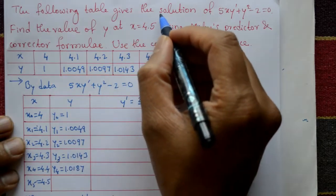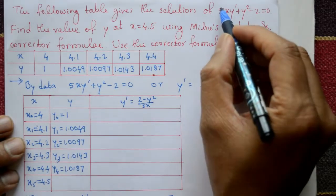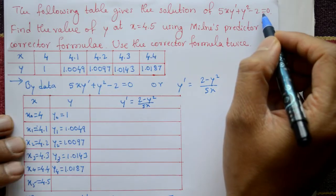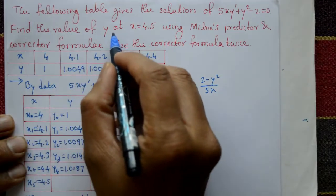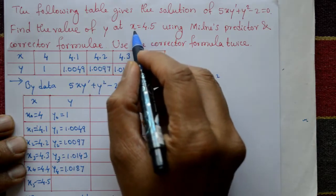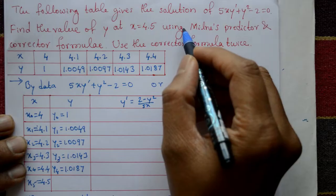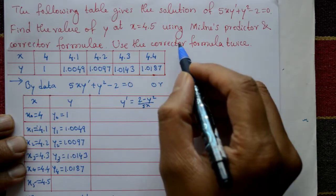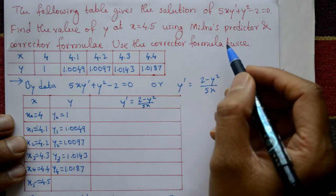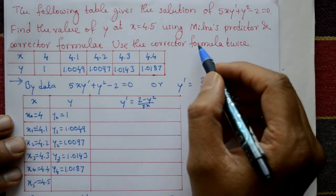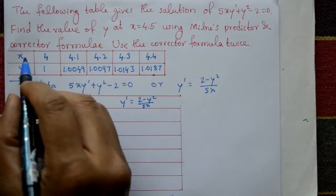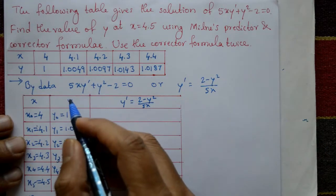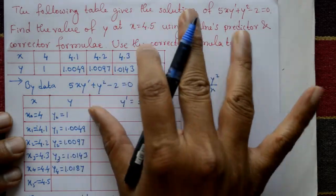The following table gives the solution of 5xy' + y² - 2 = 0. Find the value of y at x = 4.5 using Milne's predictor and corrector formula. Use the corrector formula twice. The x values and y values are given in the table.